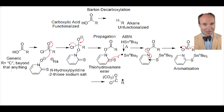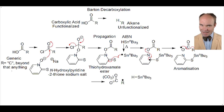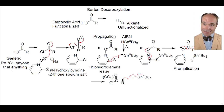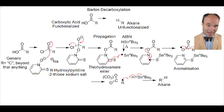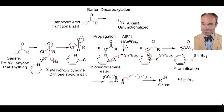But we need an alkane. So, where shall we get an extra hydrogen from? What about tin hydride? Now we can get our desired alkane and form more tributyl tin radical to react with additional thiohydroxamate ester.